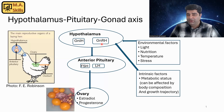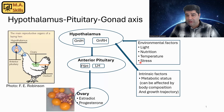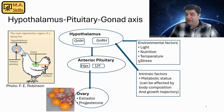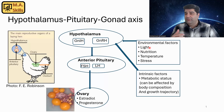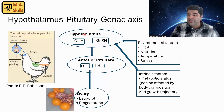Now let's talk about the environmental factors that can affect the activation of the HPG axis. We have factors like light, nutrition, temperature, and stress. Any kind of stress, abnormal temperature, malnutrition, or abnormal light intensity or light duration will affect the hypothalamus negatively.